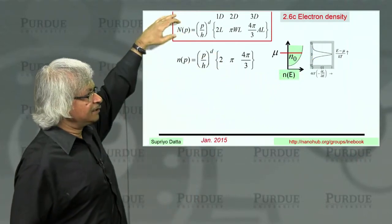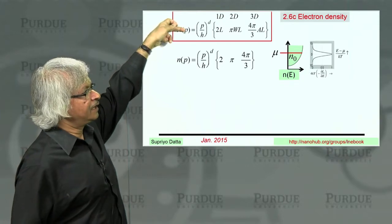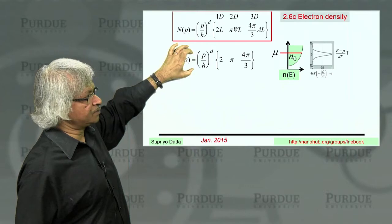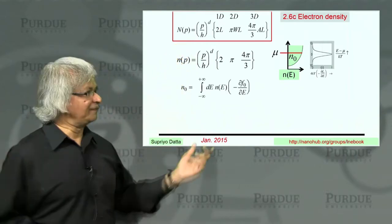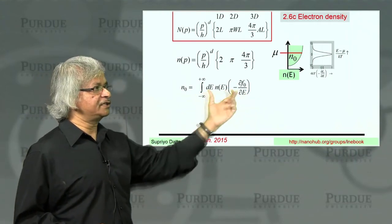So what we could do then is, this is the expression we had for N of P. If you take electron states per unit volume, you get the small n of P. And then you can combine it with the energy momentum relation to get an N of E.